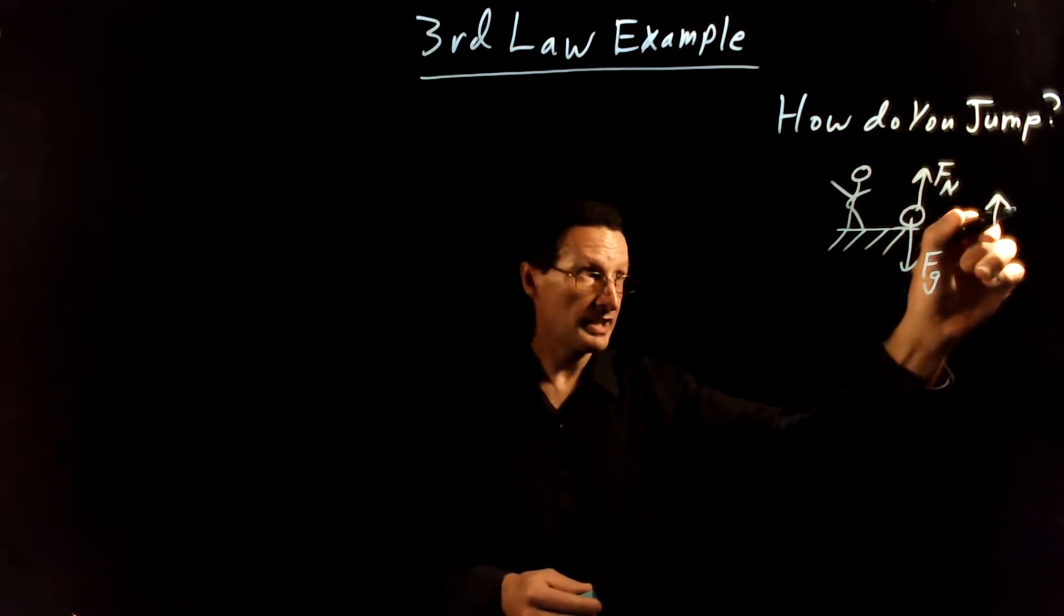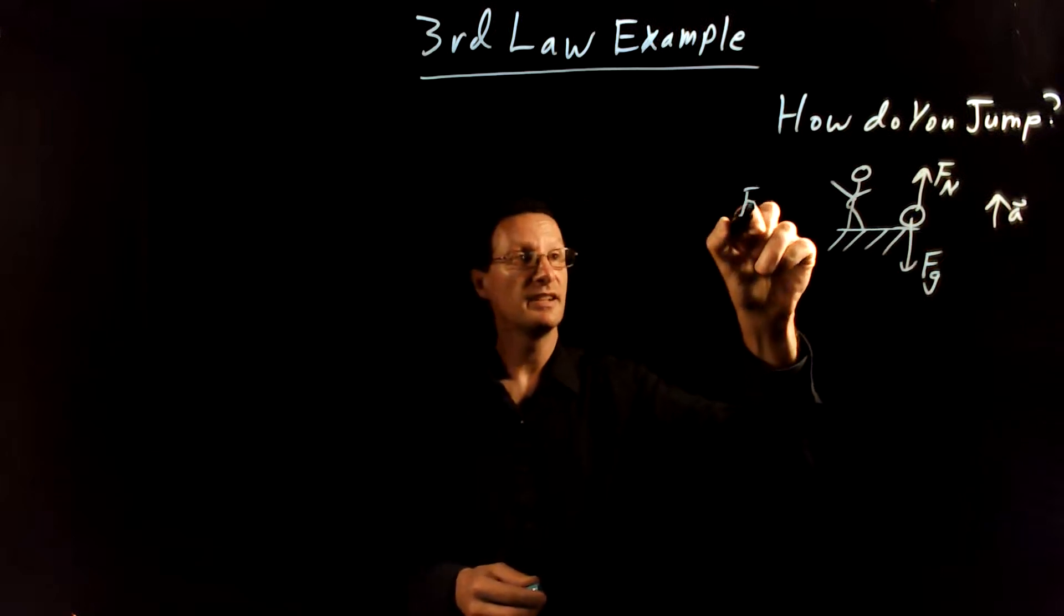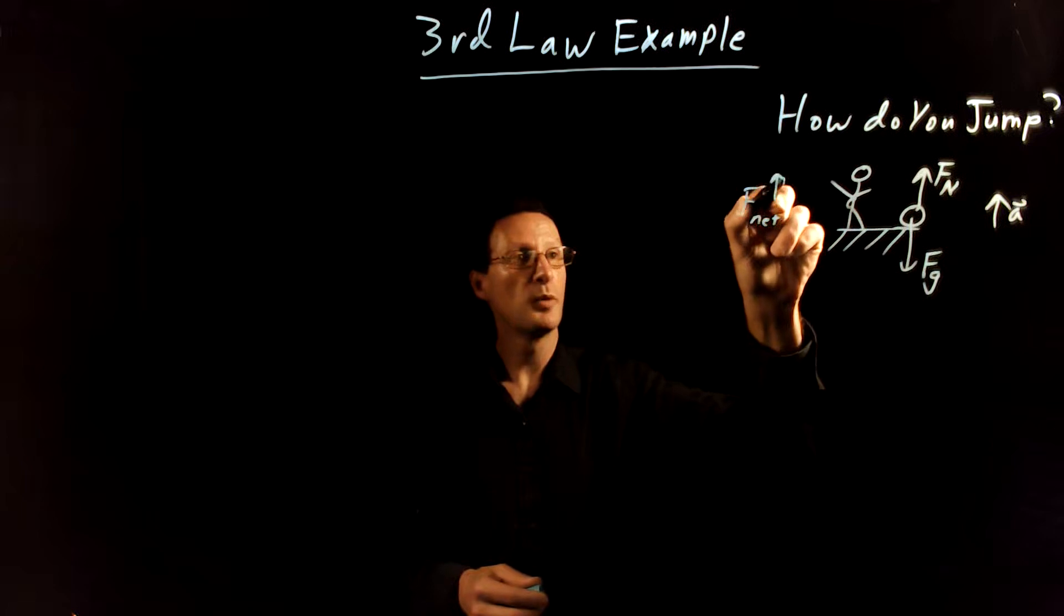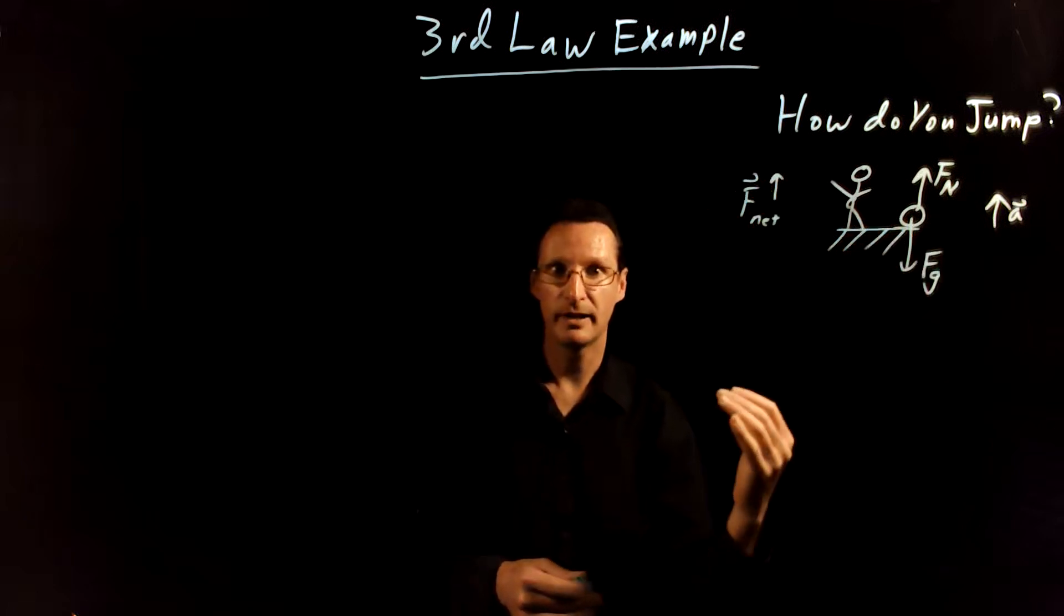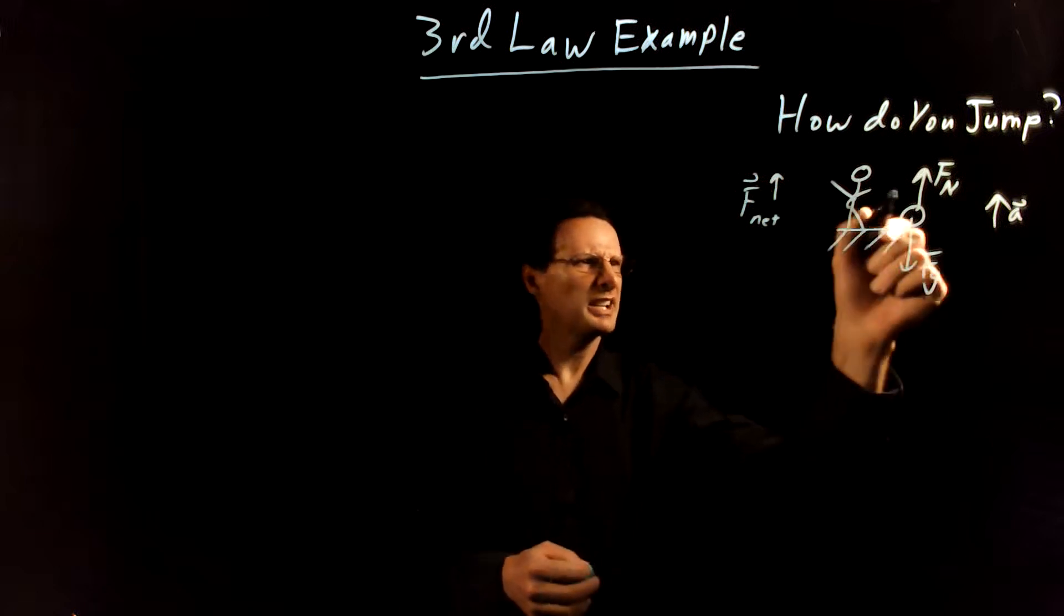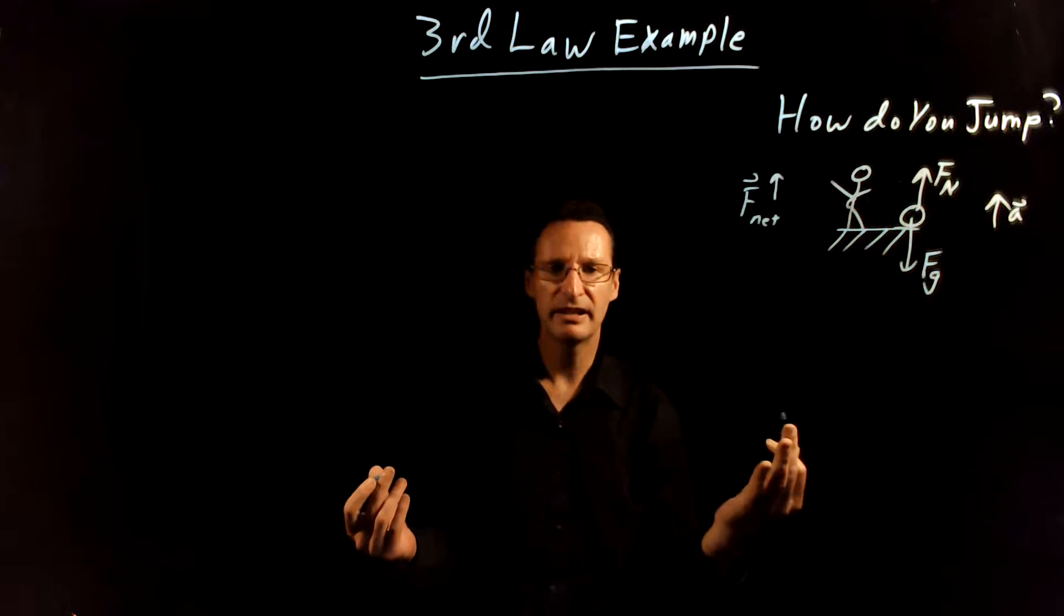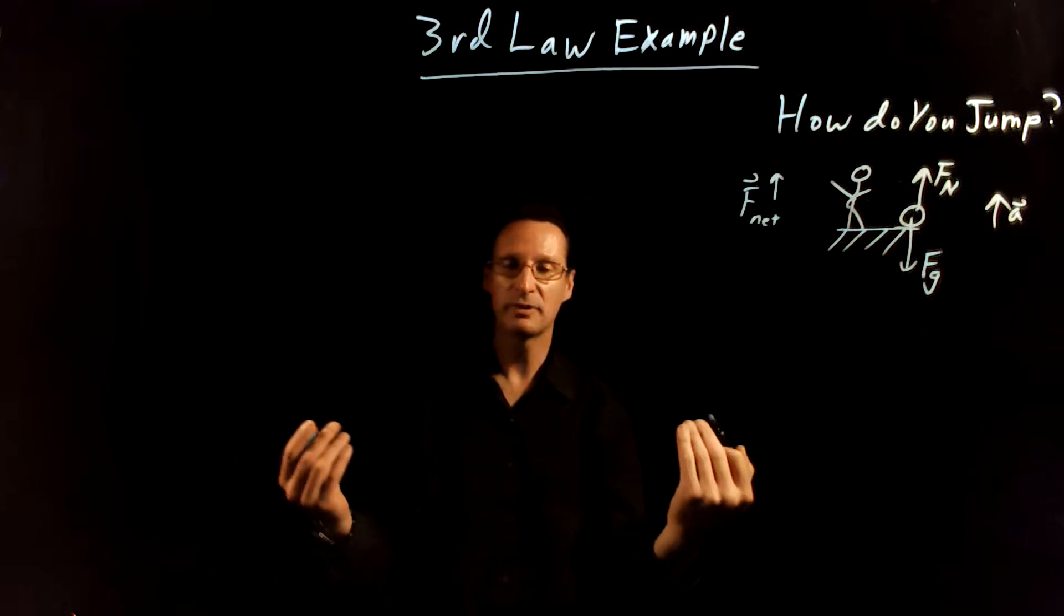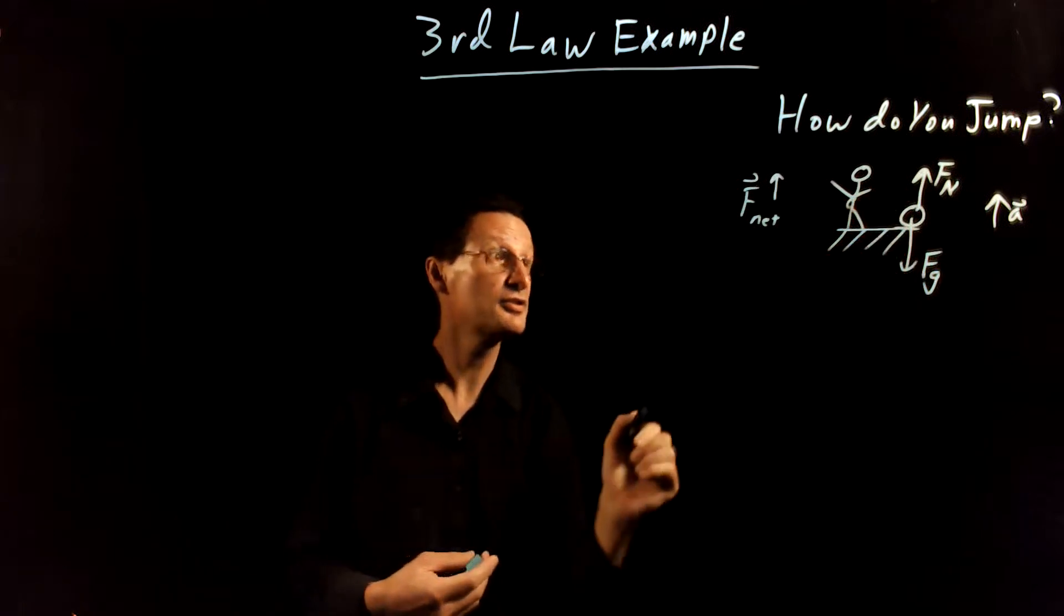If we're going to jump, we need to have your acceleration point up. So that means that the net force must also point up. And note that I never draw the acceleration or the net force on the free body diagram. Okay, so how are we going to get, right now these two forces look like they're the same magnitude. How are we going to get them to be different? And also how does this connect with the third law?